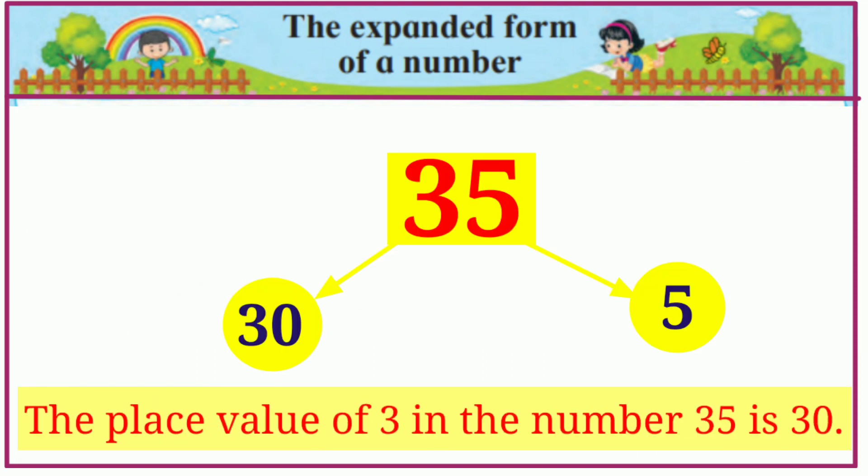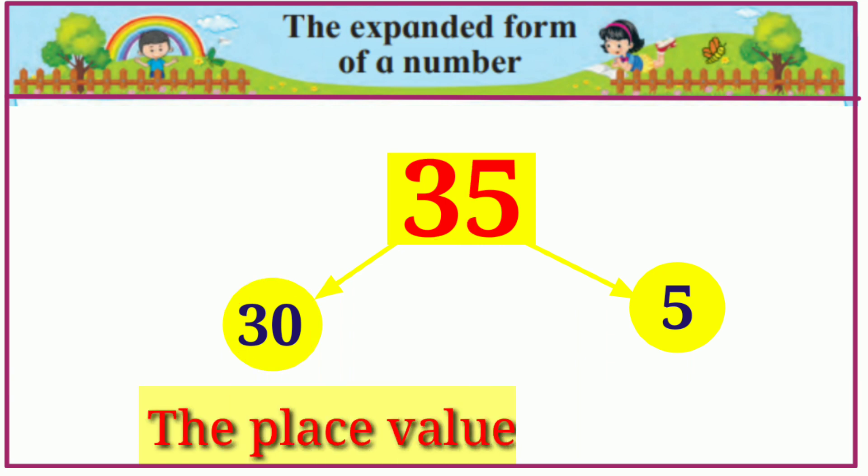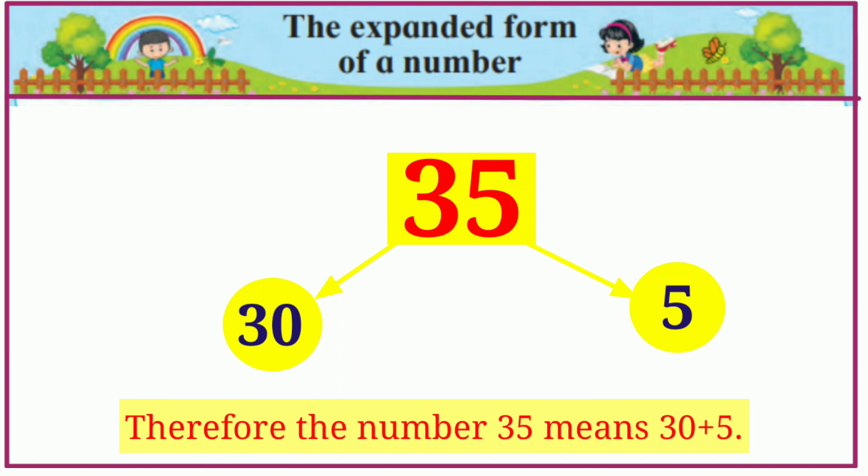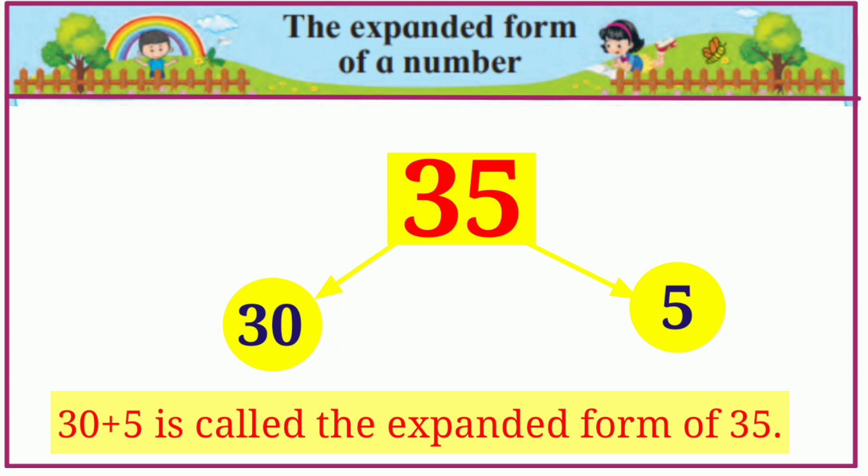The place value of 3 in the number 35 is 30. The place value of 5 is 5. Therefore the number 35 means 30 plus 5. 30 plus 5 is called the expanded form of 35.